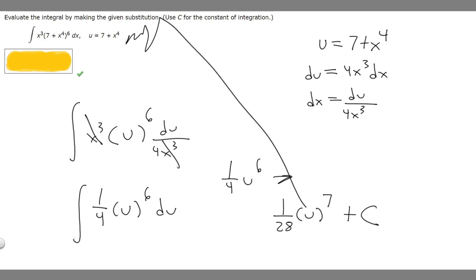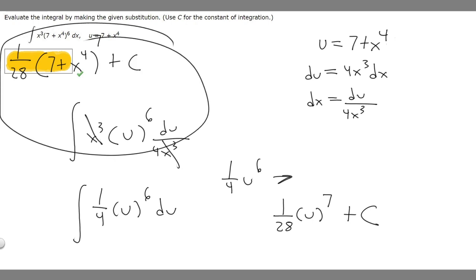So u is right here, 7 plus x to the 4th. If we plug in 1 over 28 times u, we get 7 plus x to the 4th raised to the 7, then plus c. So this is your final answer.